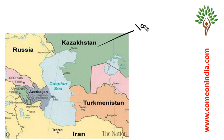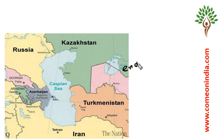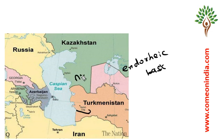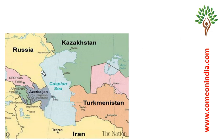The Caspian Sea is also known as an Endorheic Basin, which means it is a basin without any outflow. The Caspian Sea is located between Europe on one side and Asia on the other side.